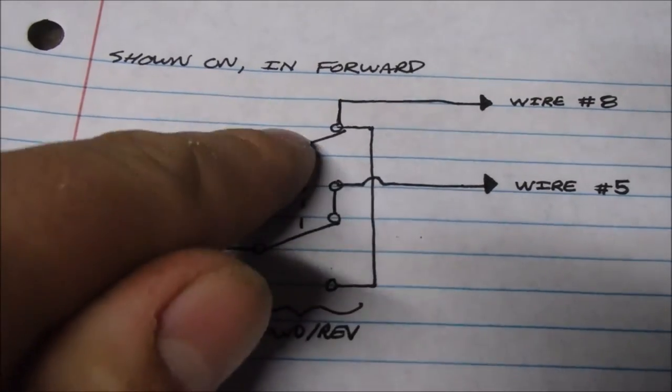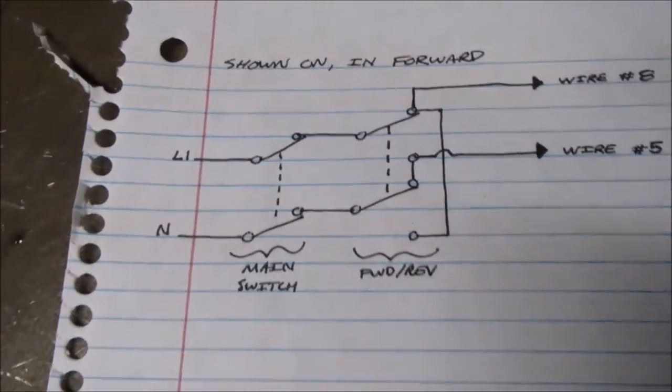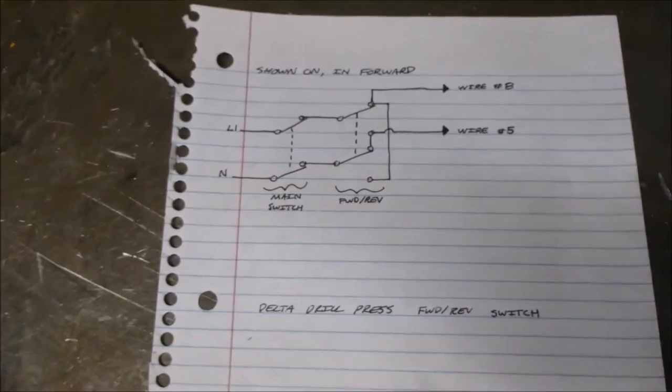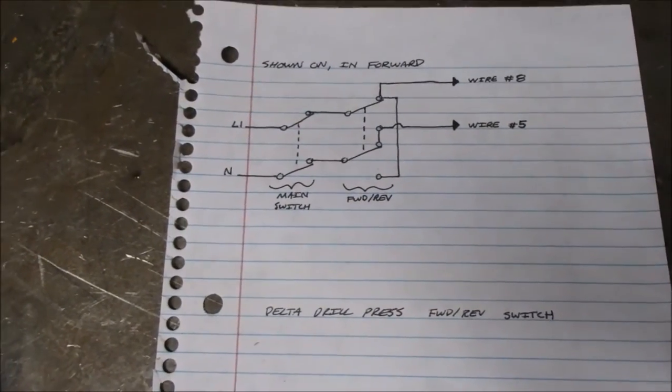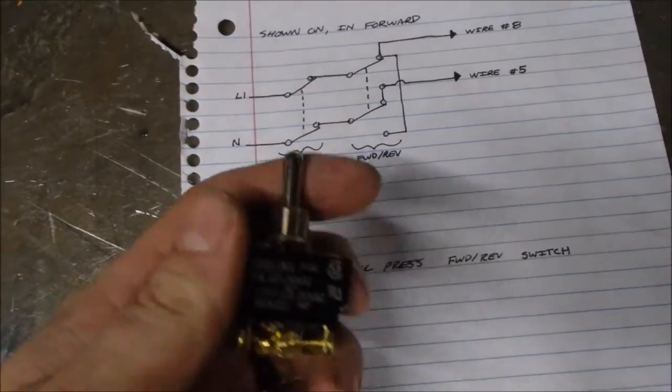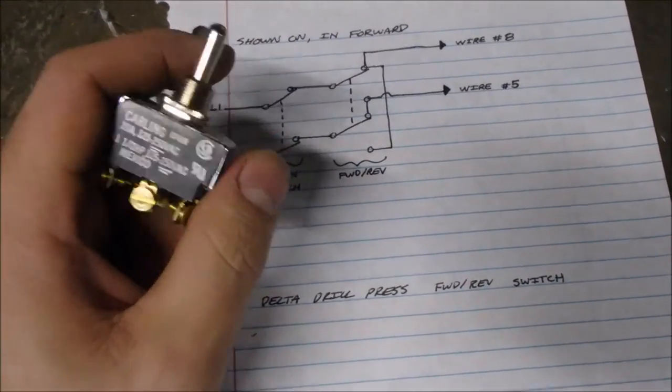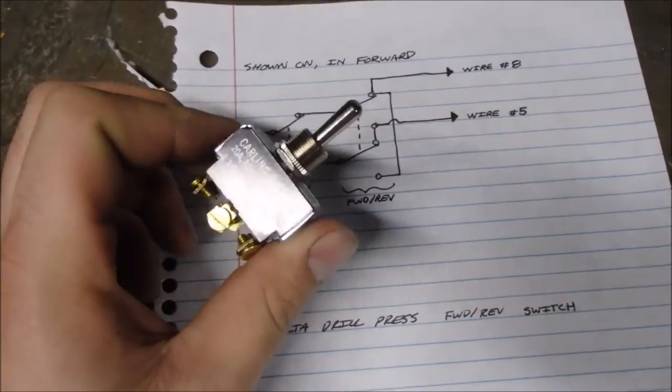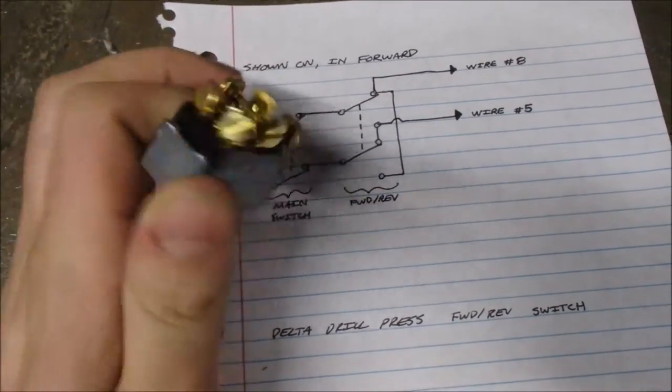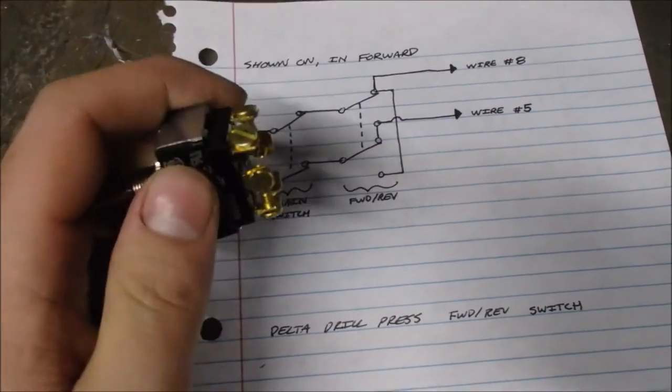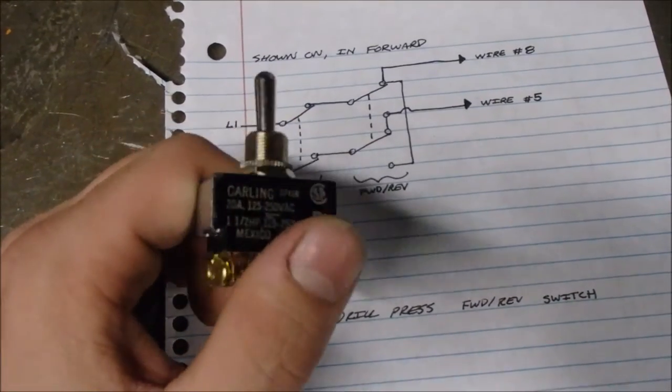Instead of buying a $50 drum switch to do this, or an even more expensive variable frequency drive, you can buy a box, a cover, and a switch for about five dollars, and then find some cord laying around and make yourself a reversing switch. So let's do that.